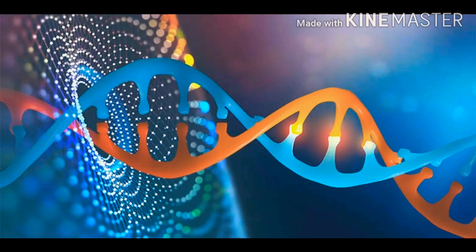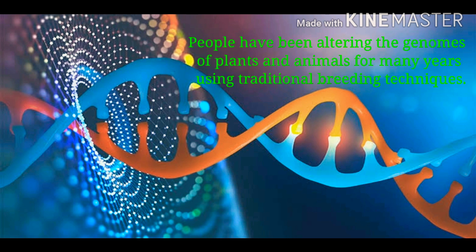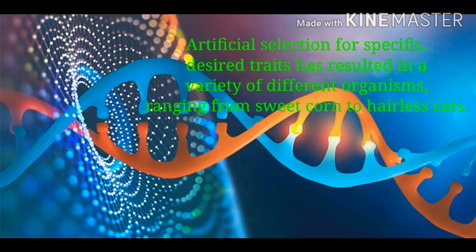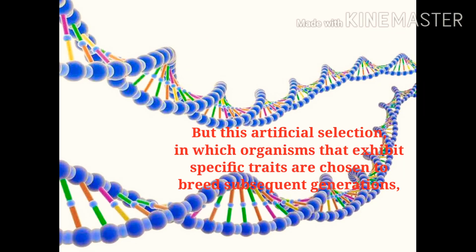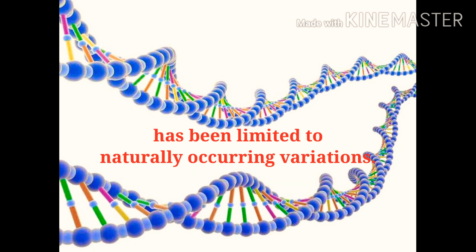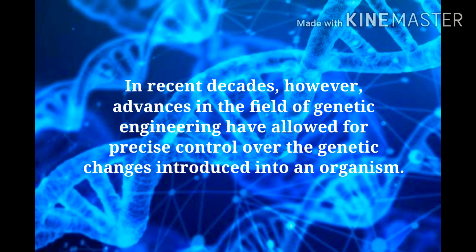People have been altering the genomes of plants and animals for many years using traditional breeding techniques. Artificial selection for specific desired traits has resulted in a variety of different organisms, ranging from sweet corn to hairless cats. However, this artificial selection has been limited to naturally occurring variations.